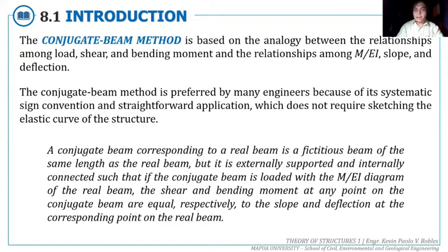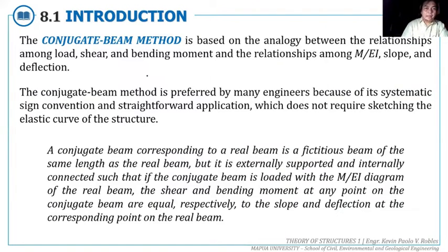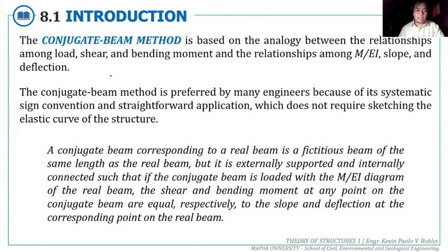The conjugate beam method is based on the analogy between the relationships among load, shear, and bending moment, and the relationships among M/EI, the slope, and the deflection. The conjugate beam method is preferred by many engineers because of its systematic sign convention and straightforward application, which does not require sketching the elastic curve of the structure.